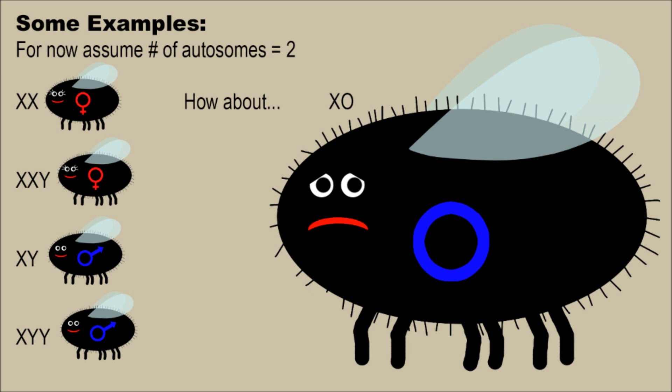What if you have three autosomes, or four, or whatever number? Just figure out the ratio between X chromosomes and autosomes. Like if you have six X chromosomes and six autosomes, you have a female. Six autosomes and three X chromosomes — you have a male.